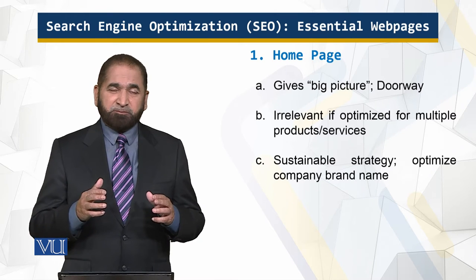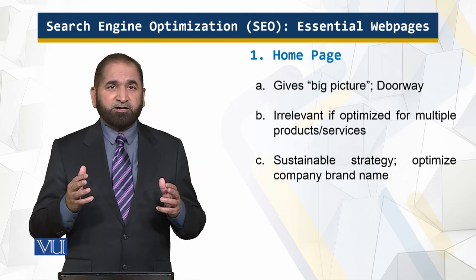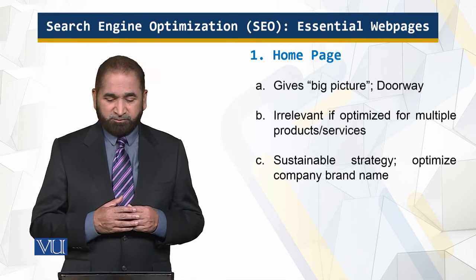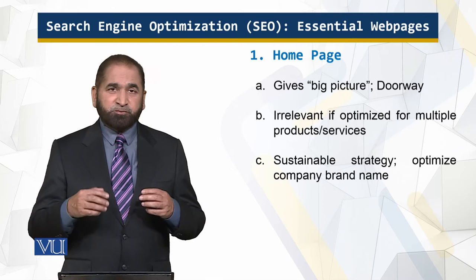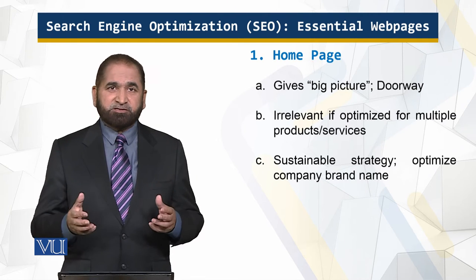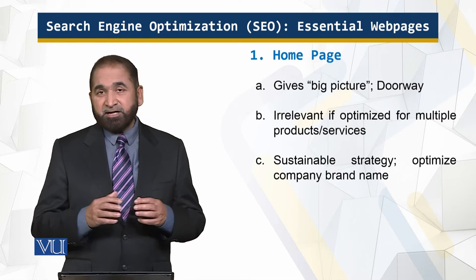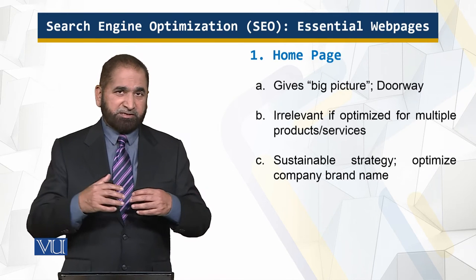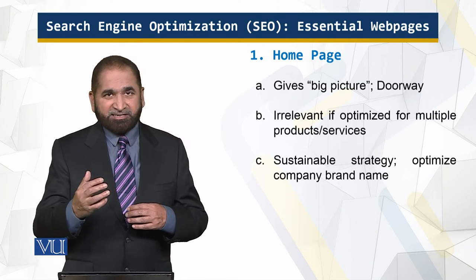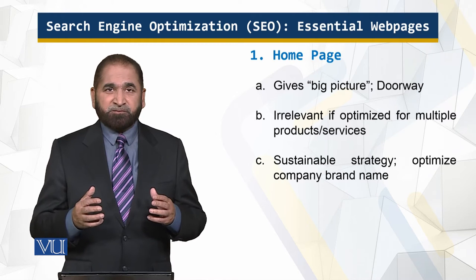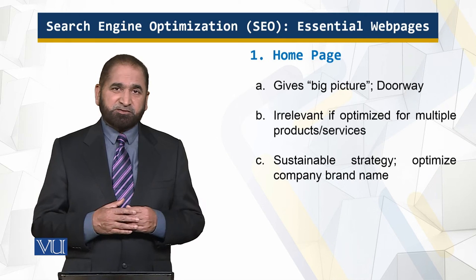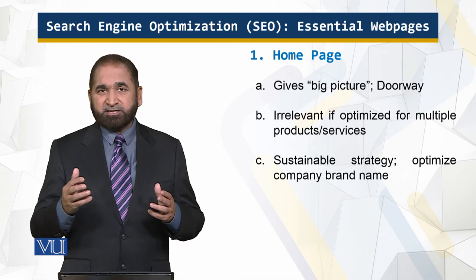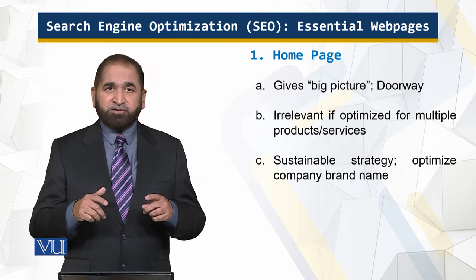The home page gives a big picture and an overview of your website — it is like a doorway to your website. If you try to optimize it with reference to multiple products and services, it will not serve the purpose and will become irrelevant. If you have multiple services, focus on the brand name, the brand culture, and the keywords which are relevant to your brand on the main page.